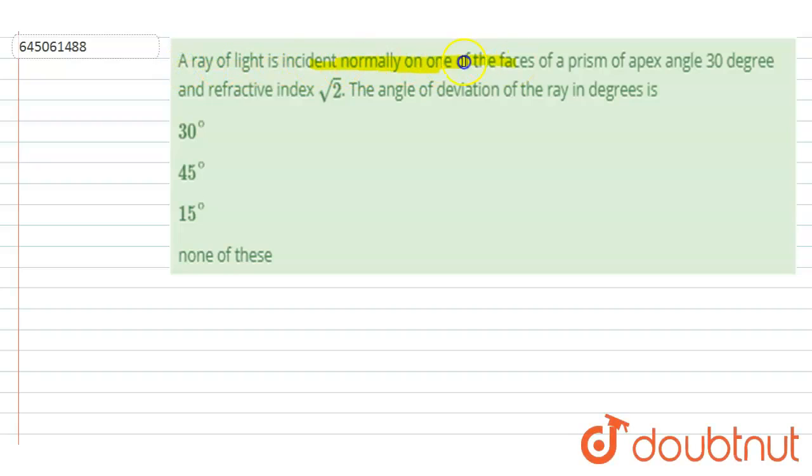is incident normally on one of the faces of a prism of apex angle 30 degrees, and the refractive index of the prism is root 2. The angle of deviation of the ray in degrees you have to find out. So...